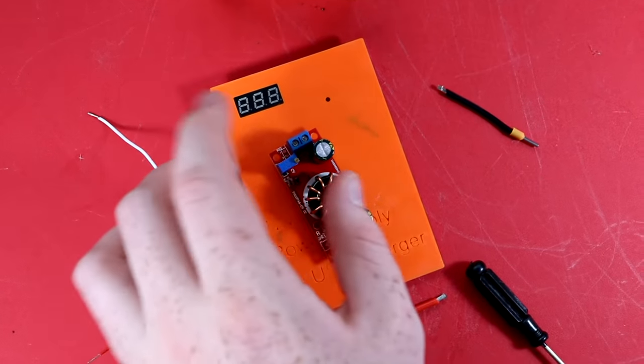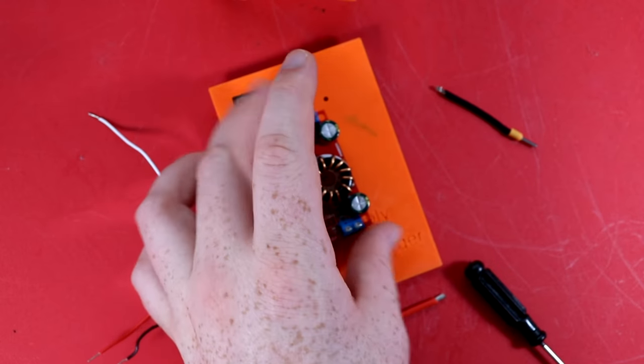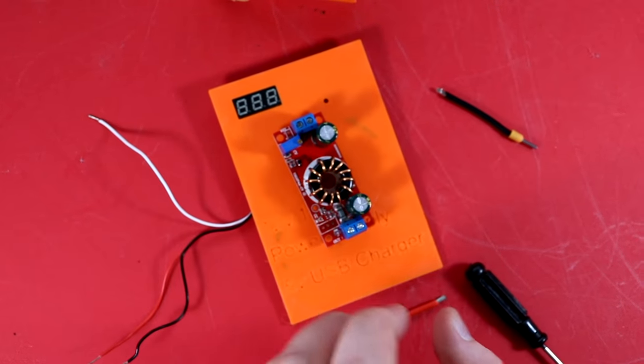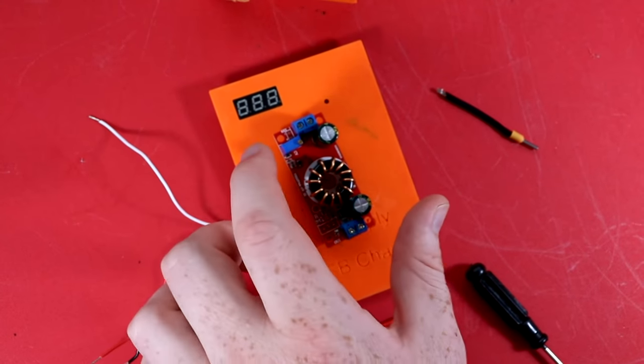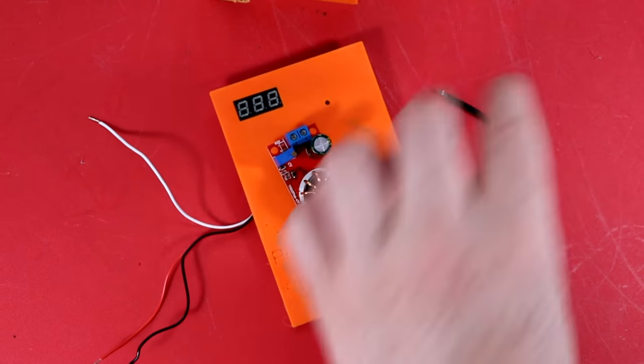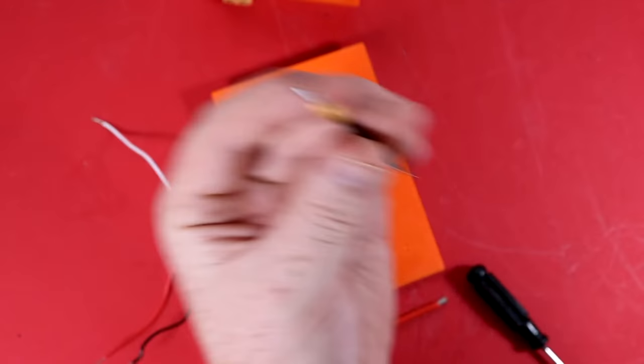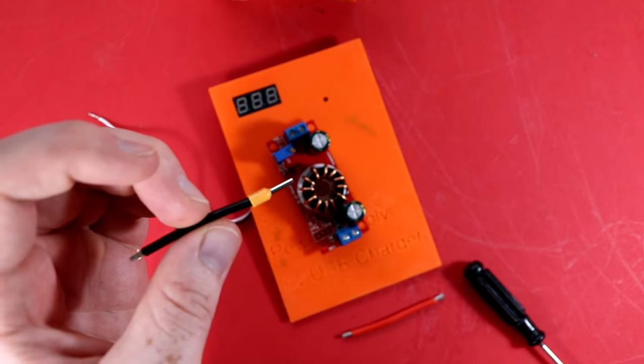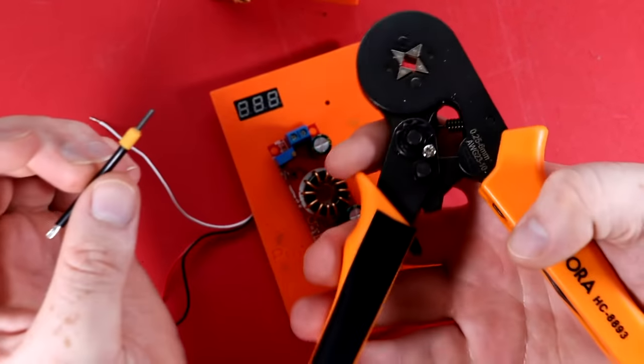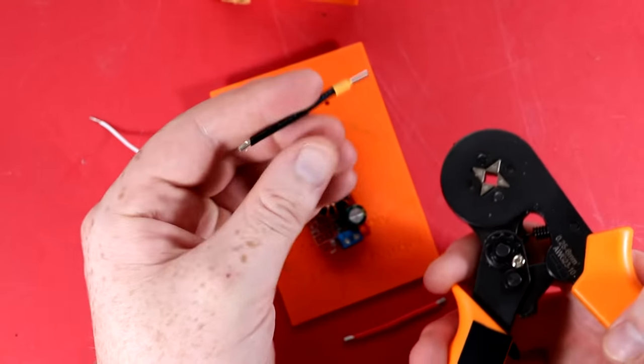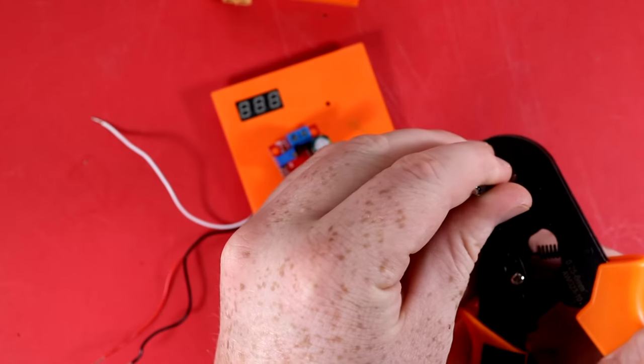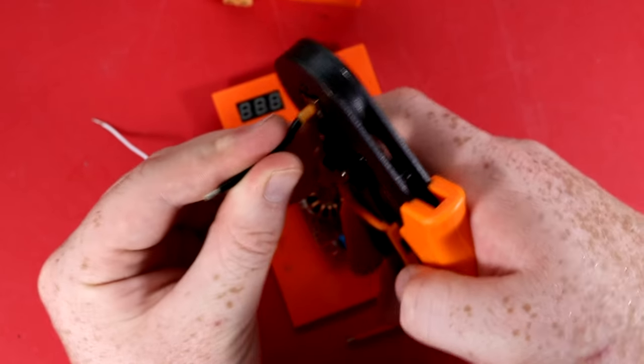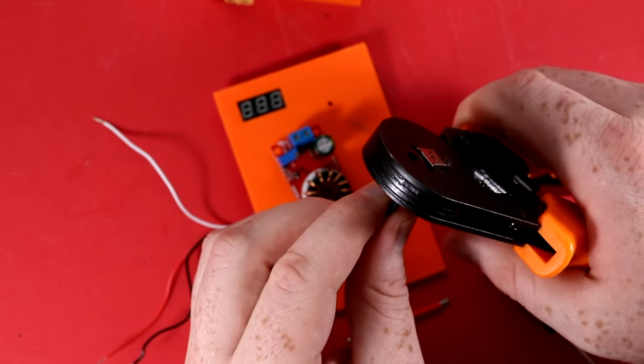Alright so first thing I'm going to do is I'm going to hook this up for testing and to adjust the voltage regulator on this thing. So here I'm using what's called ferrule connectors. And this is ferrule crimpers. And basically you put the right gauge wire that you're using, put it in these ferrule connectors, crimp it.